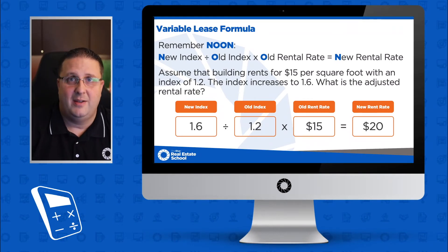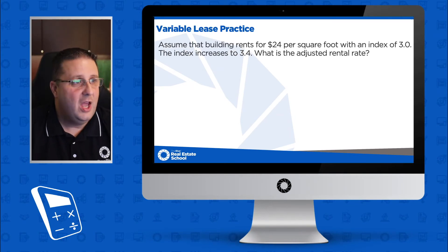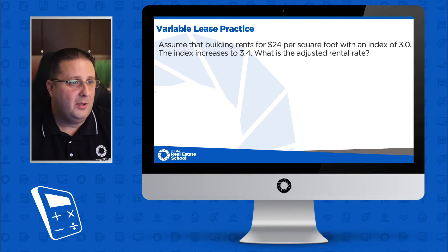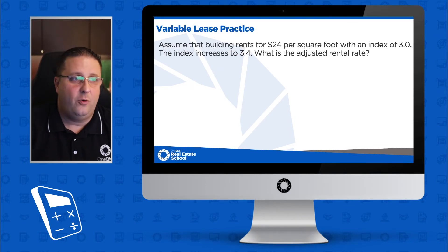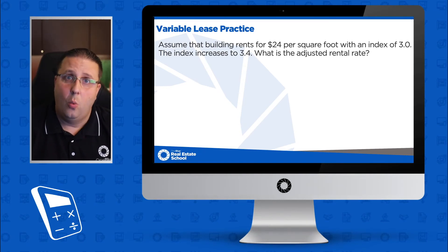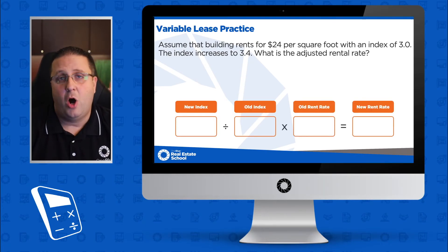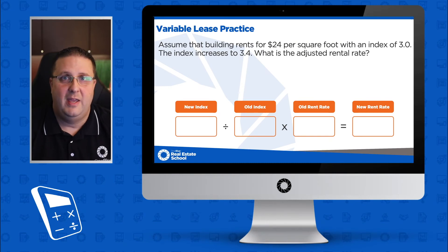Alright, let's practice — here's one for you. Assume that a building rents for $24 per square foot with an index of 3.0. The index increases to 3.4. What is the adjusted rental rate? Here are the boxes — go ahead and hit pause, solve the problem, and when you're ready for the answer, hit play.